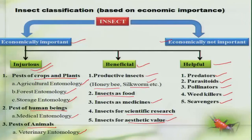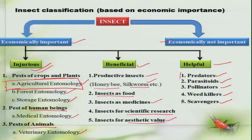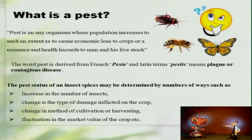Now in this course, we are mainly concentrating on agricultural entomology, dealing with pests which cause damage to agricultural crops and also the predators and parasitoids which feed on these agricultural pests and are beneficial to human beings. We call this group pests. So what is a pest? A pest can be any organism whose population increases to such an extent that it causes an economic loss to the crop, or causes nuisance or health hazards to human beings and livestock.